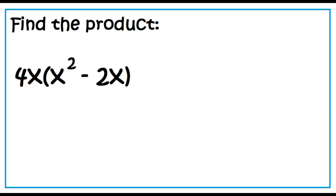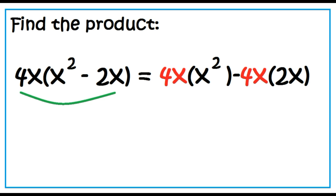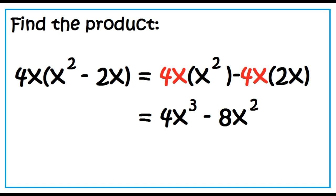Next: 4X times the quantity X squared minus 2X. Distribute 4X to each of the terms: 4X times X squared minus 4X times 2X. This is equal to 4X cubed minus 8X squared.